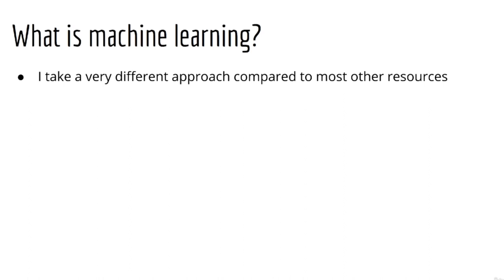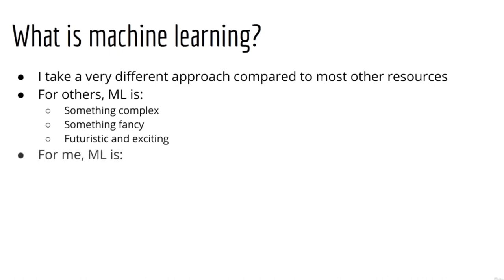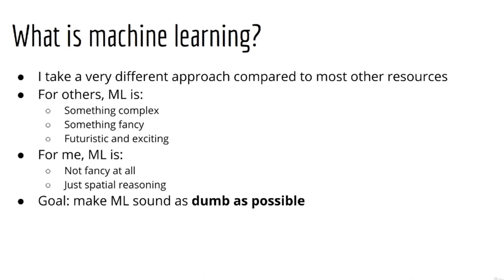In general, I think the approach most other resources take is that they like to frame machine learning as something complex and fancy and something futuristic and exciting. My approach, instead, is rather kind of depressing. How I want you to think of machine learning is that it's something not fancy at all and something that only requires spatial reasoning. My goal is to make machine learning sound as dumb as possible.